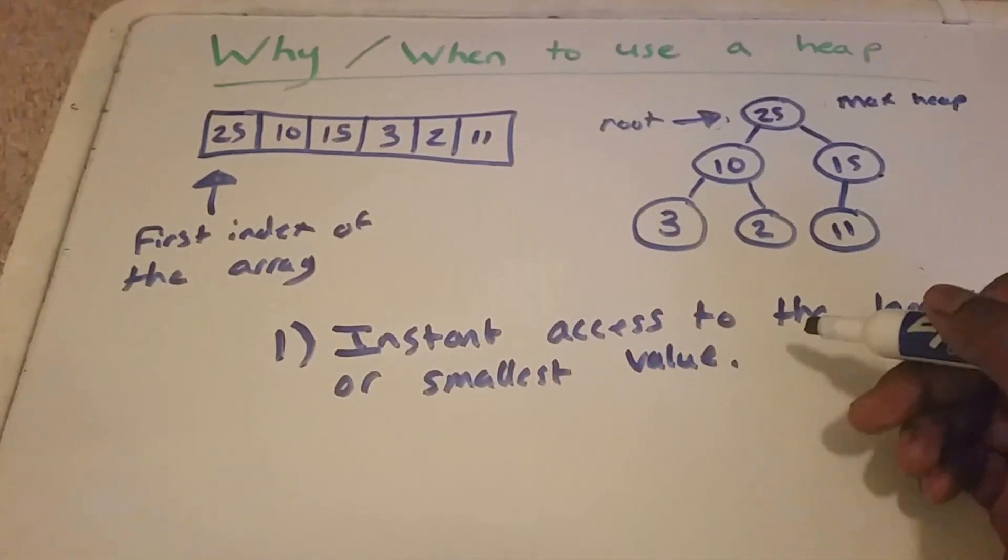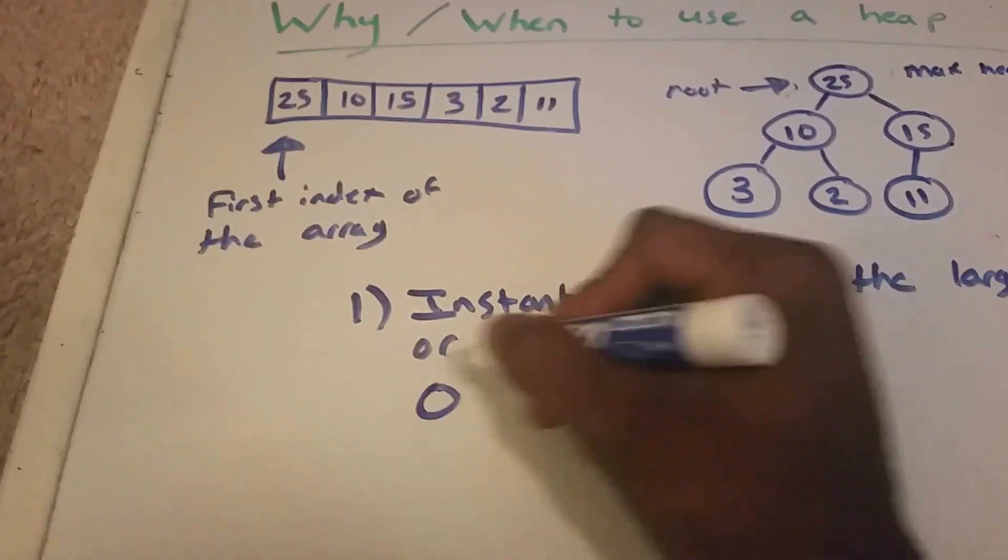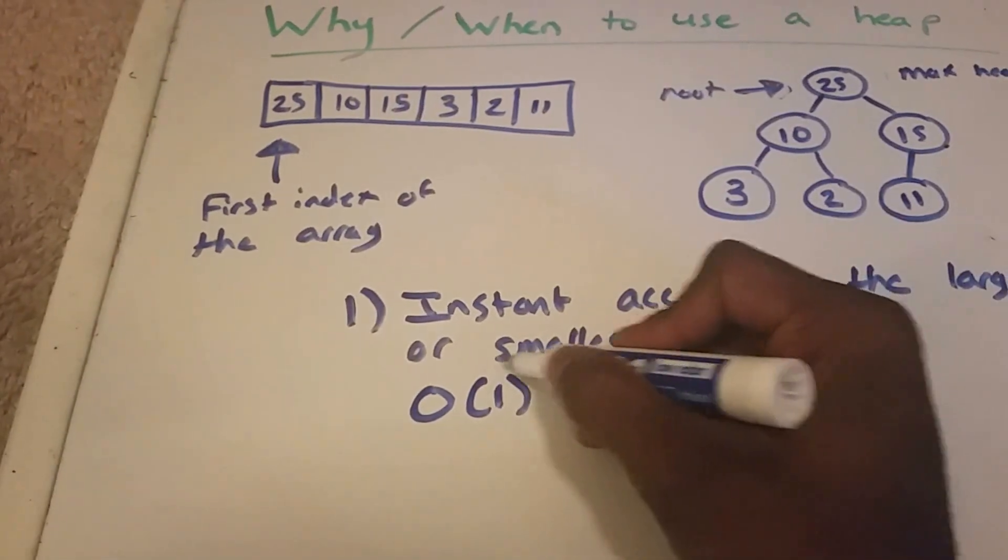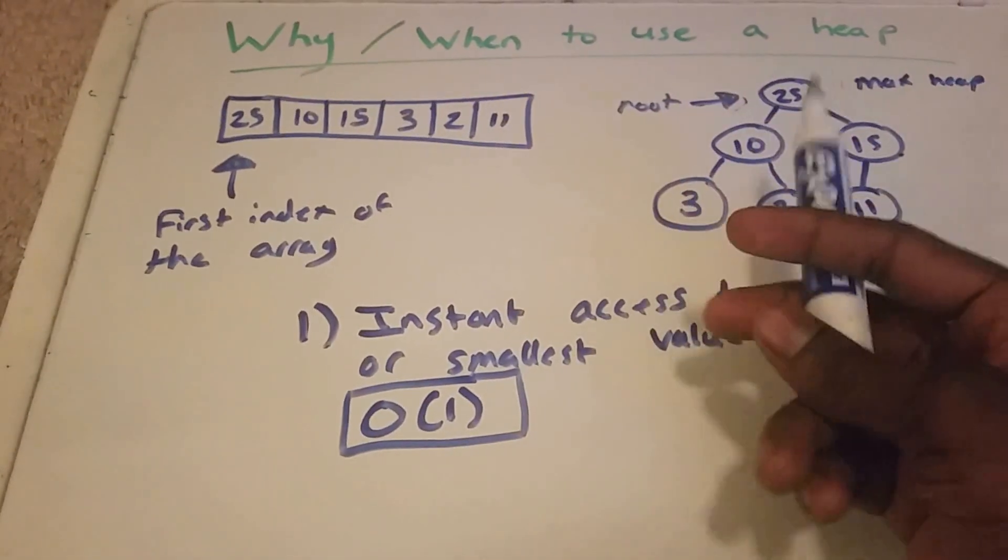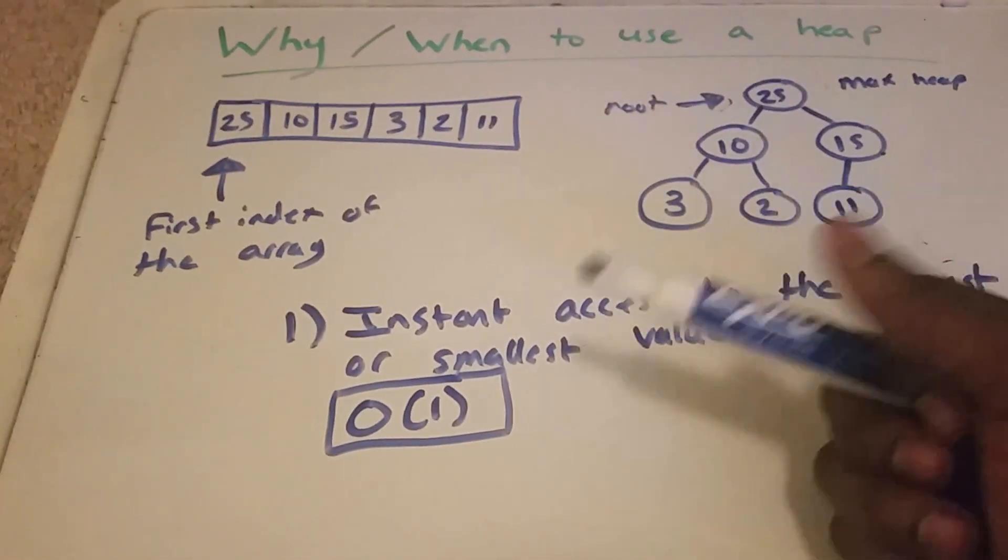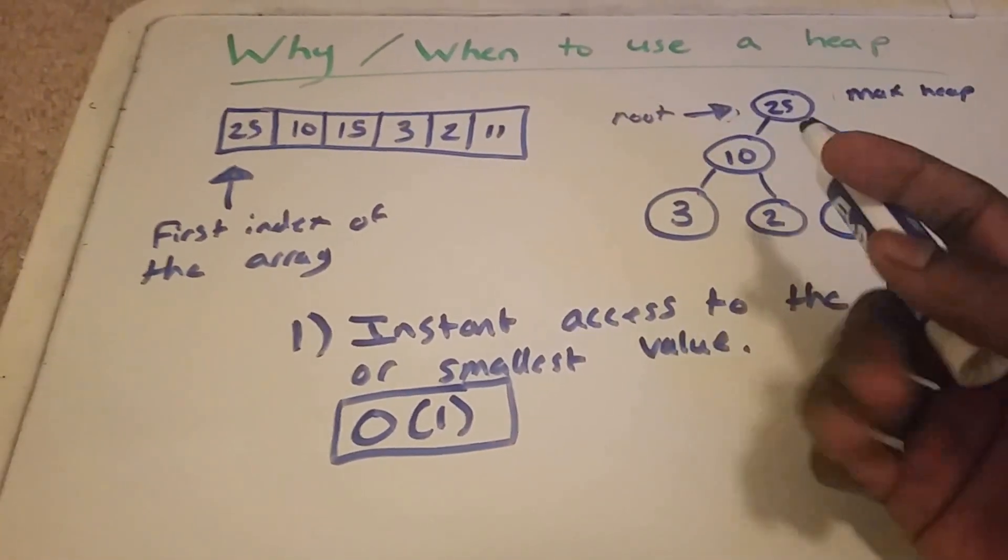And what I mean by instant access, I'm talking big O of 1, also known as constant time. That means we know where to find the largest value, or smallest value. In this case the largest value.